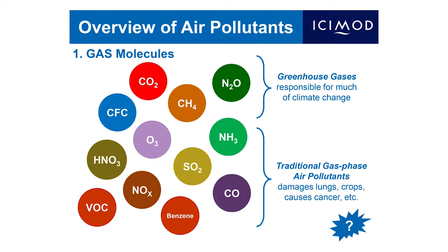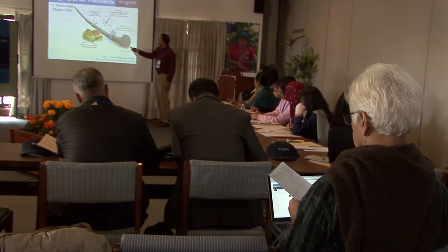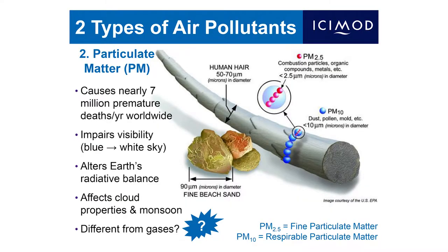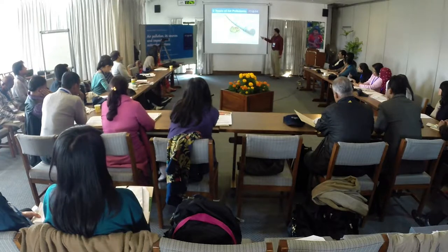There are two broad categories of air pollutants — one being gases. The other is particulate matter, abbreviated PM. Particulate matter consists of very small particles — liquid, solid, or combinations — suspended in the atmosphere. This diagram of a blown-up human hair gives you an idea of how small they are: most of the particulate matter we're concerned about has a diameter of one micrometer, one millionth of a meter. About 50 of these particles could be spread across the diameter of a human hair.